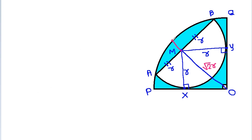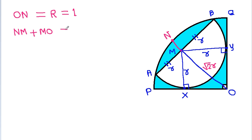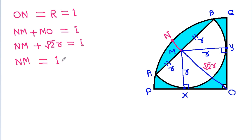Suppose this point is N. Then ON equals R, that is 1. And ON equals NM plus MO, which equals 1. So NM equals 1 minus √2·R.